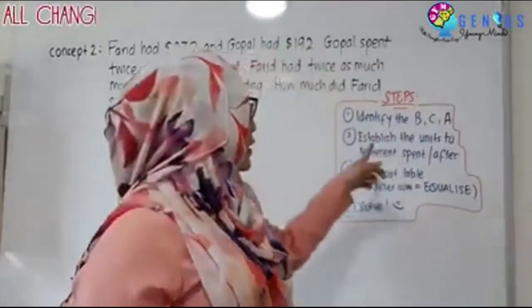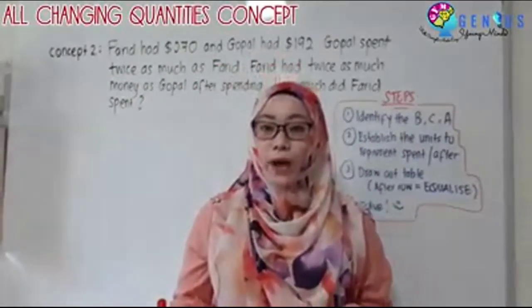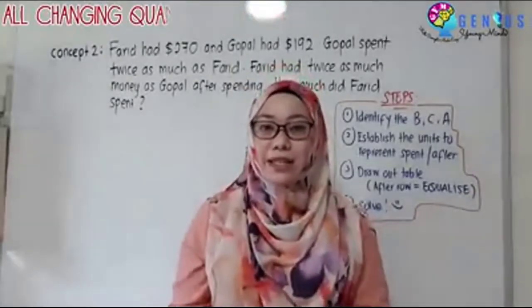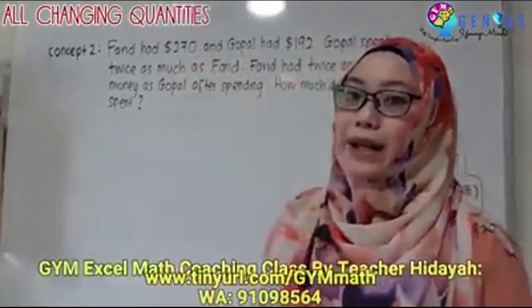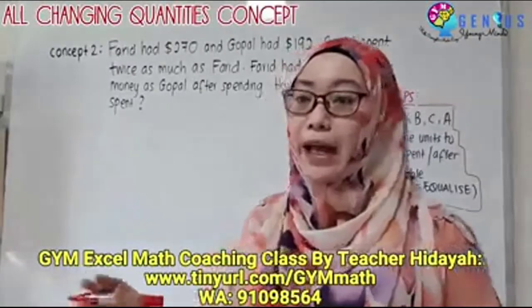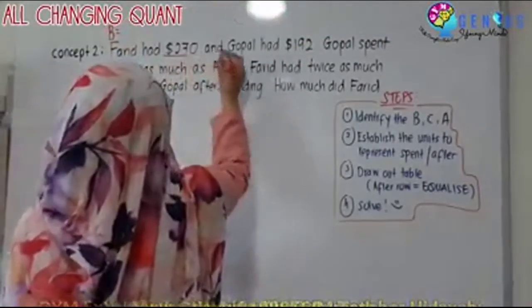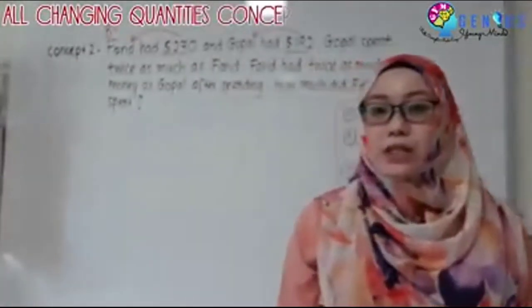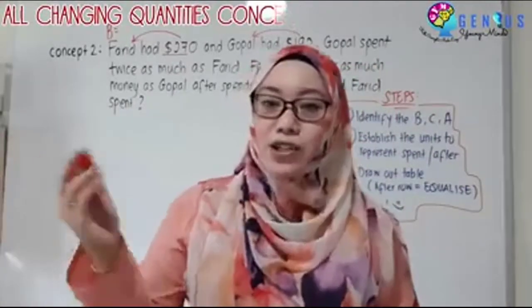The first step is to identify the BCA. In the question, you will have to identify where is the before sentence, the change sentence, and the after sentence. Farid had $270 and Gopal had $192 — this is definitely my before. I always get my students to underline and draw an arrow back to the person so that they are aware of what they are reading and can identify straight away.